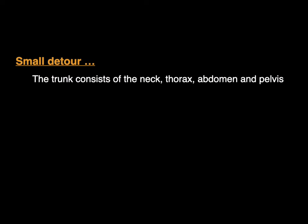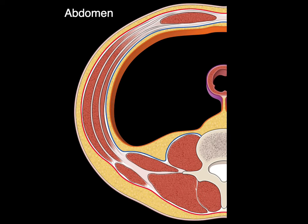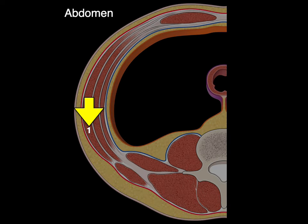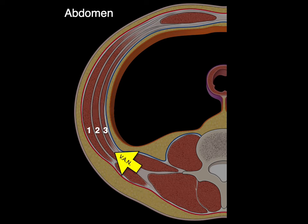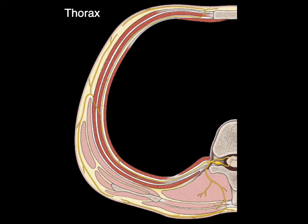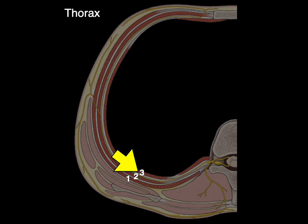The trunk in anatomy consists of the neck, thorax, abdomen, pelvis, and perineum. In cross section, the abdomen has three layers, with the vein, artery, and nerve coursing between the second and third layers. The thorax in cross section also has three layers, with the vein, artery, and nerve coursing between the second and third layer. The same pattern holds for the neck. The take-home point: the anterolateral trunk wall has three layers of muscles, and the nerves and vessels course between layers two and three.